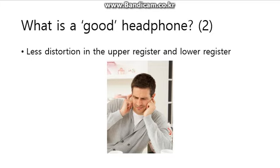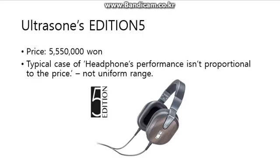The second reason is less distortion in the upper and lower registers. When we listen to music with a bad earphone, we can easily feel distortion in the upper register — when the singer screams, the song cracks. This also occurs in the lower register: deep bass sounds like 'doom doom doom.' If this cracking sound, which equals distortion, is reduced, it is a good headphone. Because headphones are audio equipment, we can only judge them with our ears, so it is hard to define which is better, and we need to get help from experts.